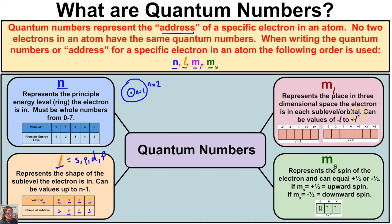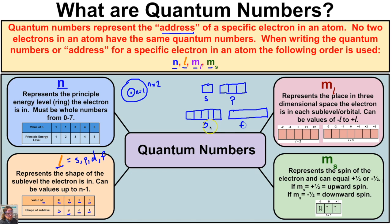The quantum number m sub l represents the place in three-dimensional space that the electron is in — each sublevel or orbital. These can be values of negative l to positive l. When we drew orbital diagrams, we said s gets one box, p gets three boxes, d gets five boxes, and f gets seven boxes. These boxes represent the actual orbitals the electrons can be in.